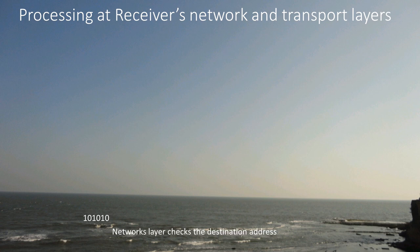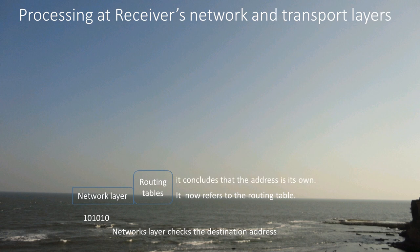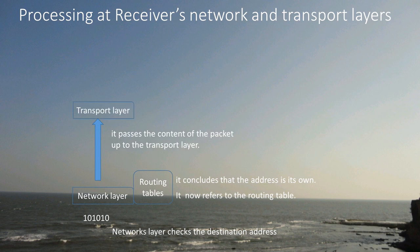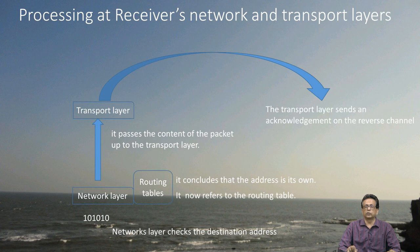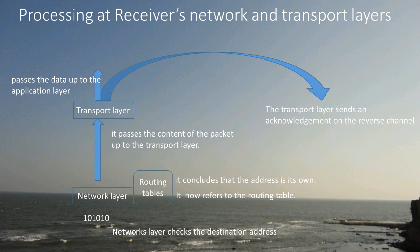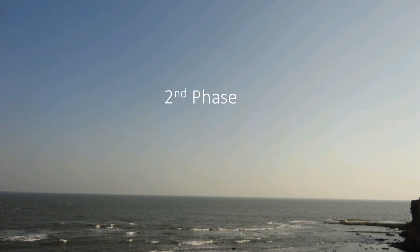At the final destination, the network layer receives the destination IP address and concludes this is the receiver — the web server or mail server. It passes the content up to the transport layer. In the earlier router case it was sent on the reverse journey, but now it is not — it is given to the transport layer, which sends an acknowledgement. The data is passed up to the application. In the mail case, this mail content is passed to the mail server and the process ends.